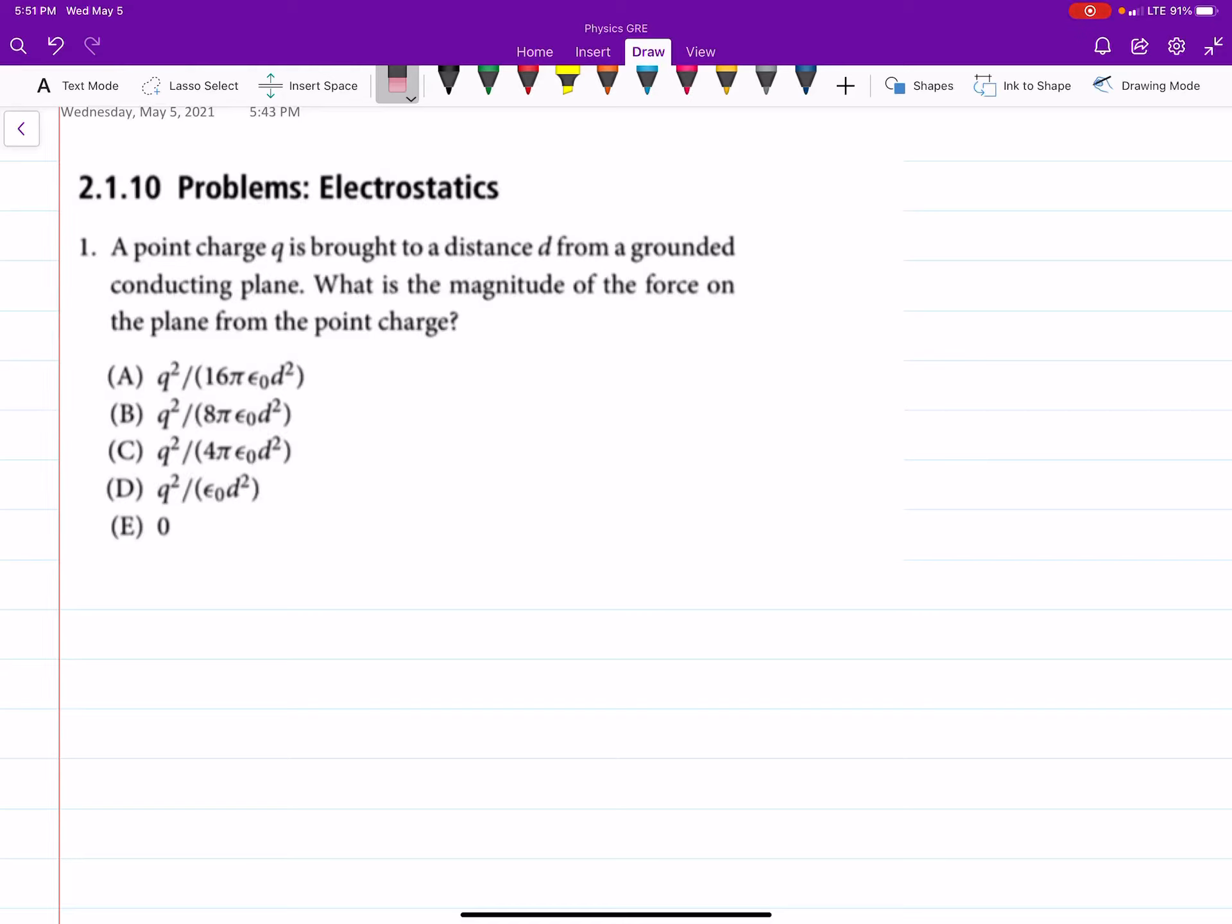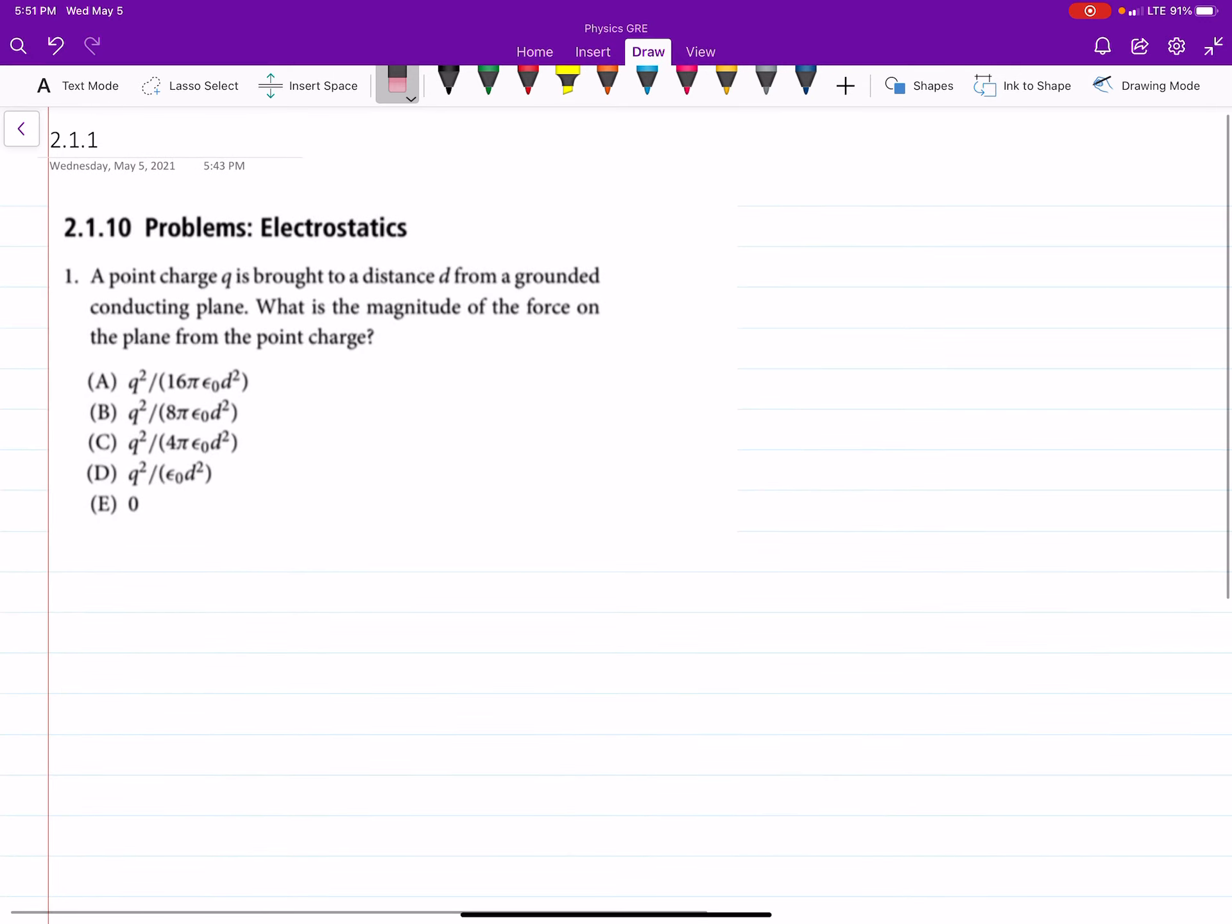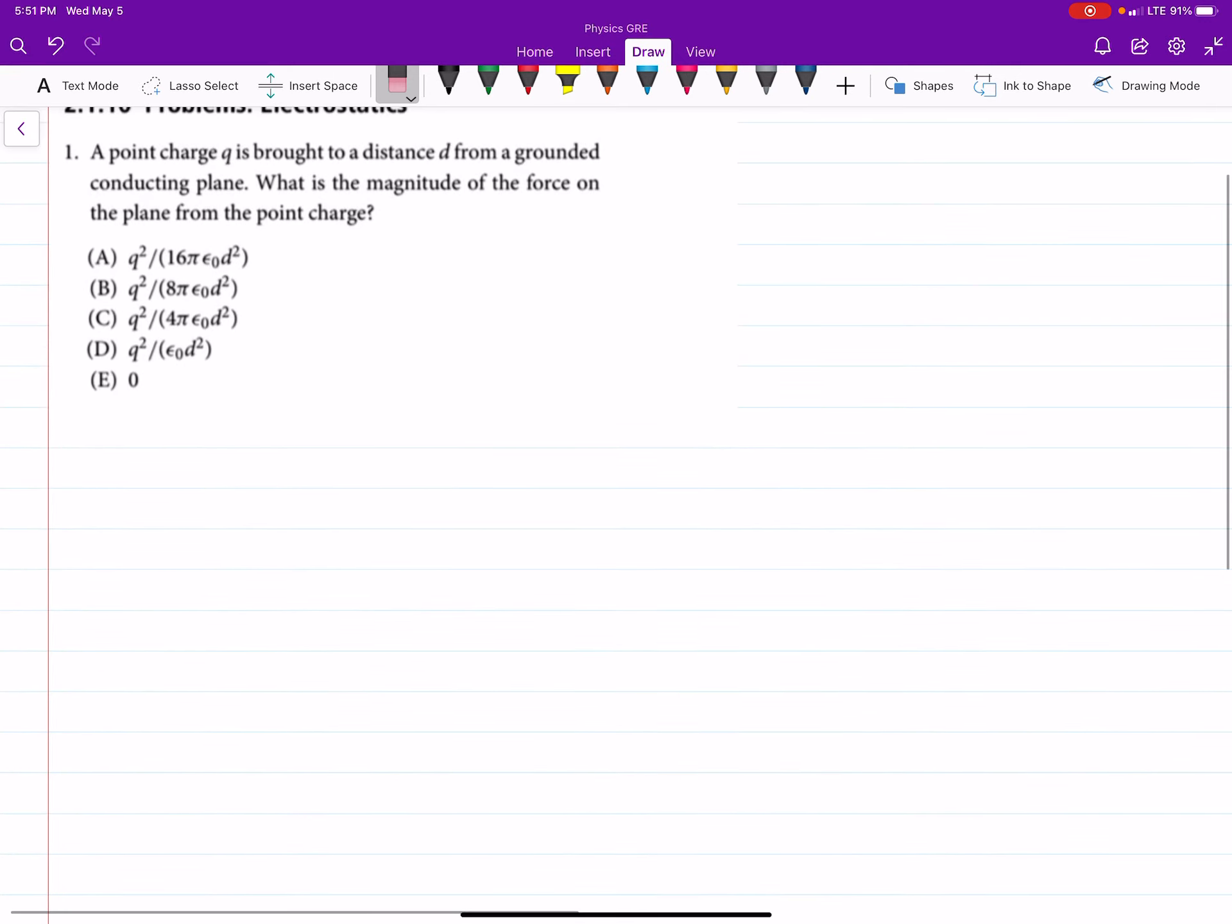So this is a problem from the Conquering Physics GRE book, and we want to find the magnitude of the force on the plane from a point charge.